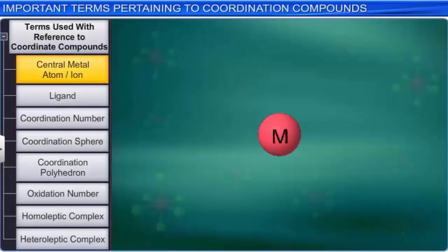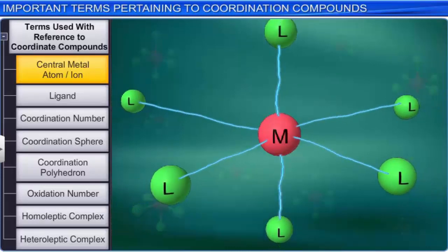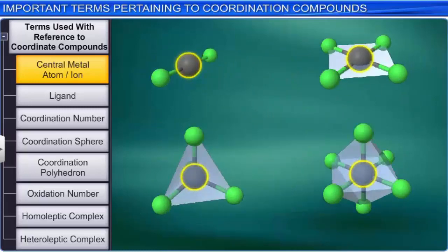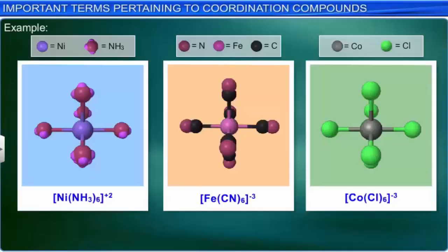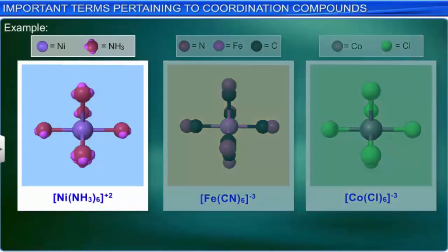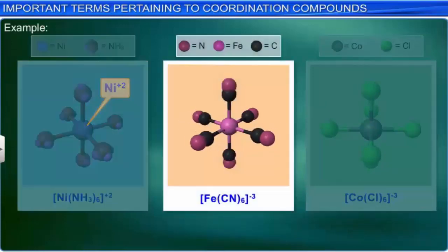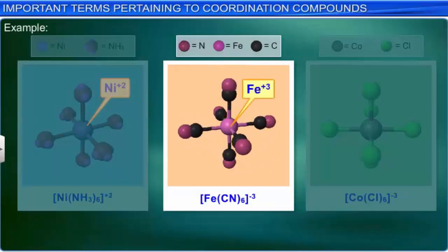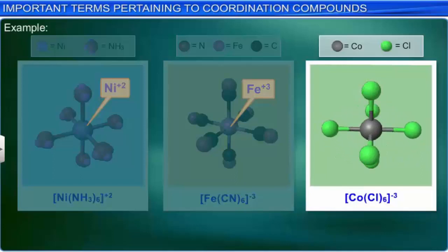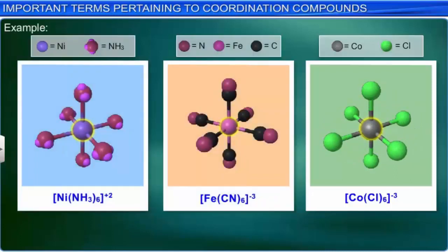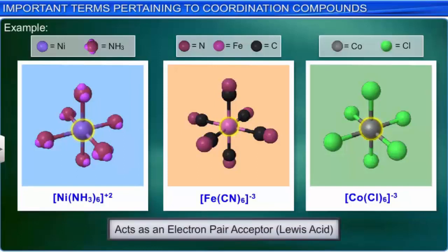The first term is central metal atom or ion. The atom or ion to which one or more neutral molecules or anions are attached in a definite geometrical arrangement around it is called the central atom or ion. For example, the central metal ion in [Ni(NH3)6]2+ is Ni2+, in [Fe(CN)6]3- is Fe3+, and in [CoCl6]3- it is the Co3+ ion. As the central metal atom or ion acts as an electron pair acceptor, it is also referred to as a Lewis acid.